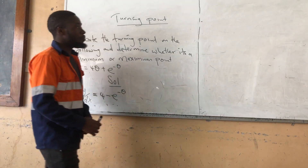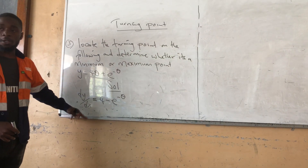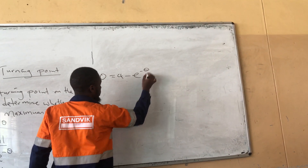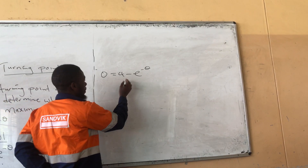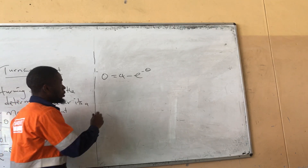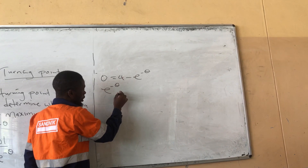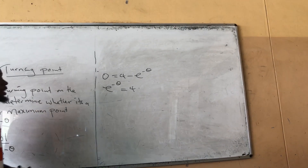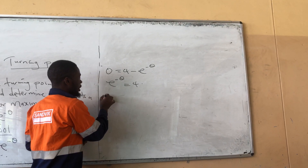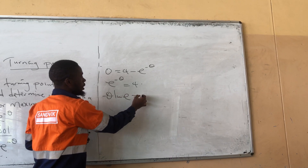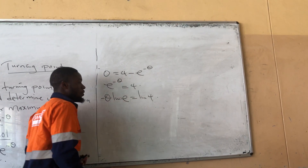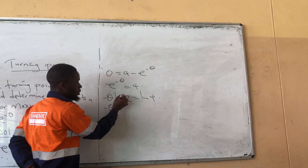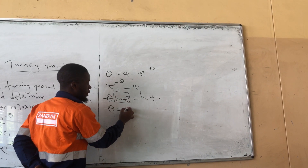At the turning point, dy/dx equals 0. So 0 equals 4 minus e to the power of negative θ. Rearranging, e to the power of negative θ equals 4. Taking the natural log of both sides: negative θ equals ln(4). Since ln(e) equals 1, we get negative θ equals ln(4).